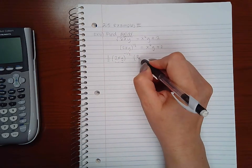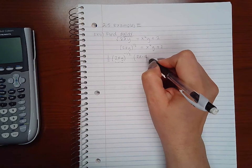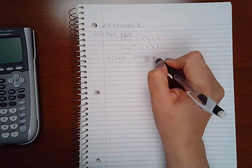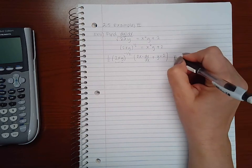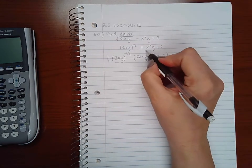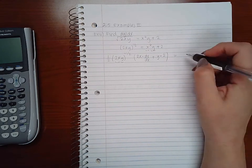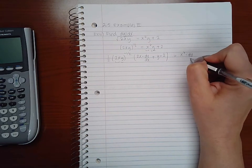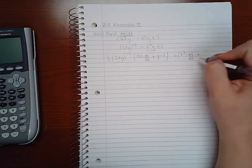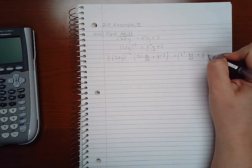So the first function times the derivative of the second function plus the second function times the derivative of the first function. Here on the right hand side we will also need to use the product rule, so the first function times the derivative of the second function plus the second function times the derivative of the first function.